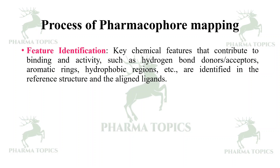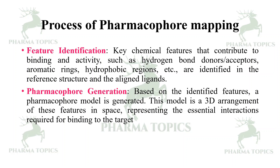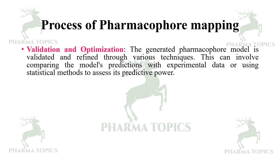The next step is feature identification: key chemical features that contribute to binding and activity — such as hydrogen bond donors, acceptors, aromatic rings, and hydrophobic regions — are identified in the reference structure and the aligned ligands. Pharmacophore generation follows: based on the identified features, the pharmacophore model is generated as a 3D arrangement of the features in space, representing the essential interactions required for binding to the target.